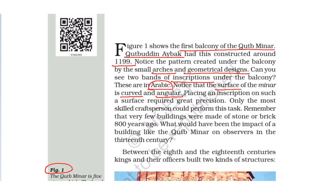As you can see in both figures, the shape of the Qutub Minar is curved. Writing something on such a curved surface requires great precision — precision means accuracy, doing it without any mistake. Only the most skilled craftspeople could perform this task. They were the ones who could write messages in Arabic language on it.